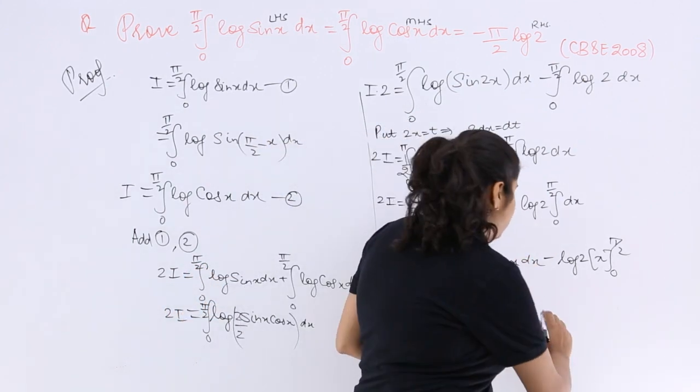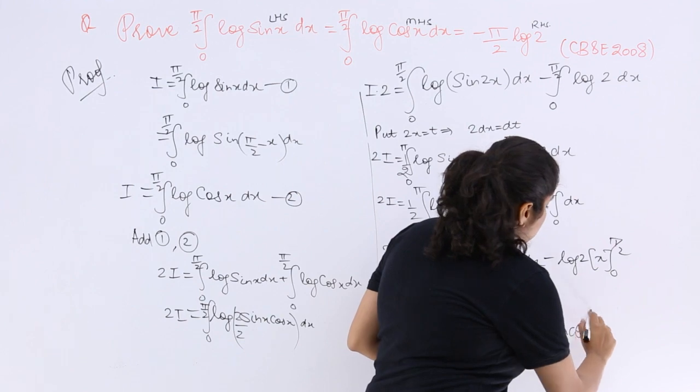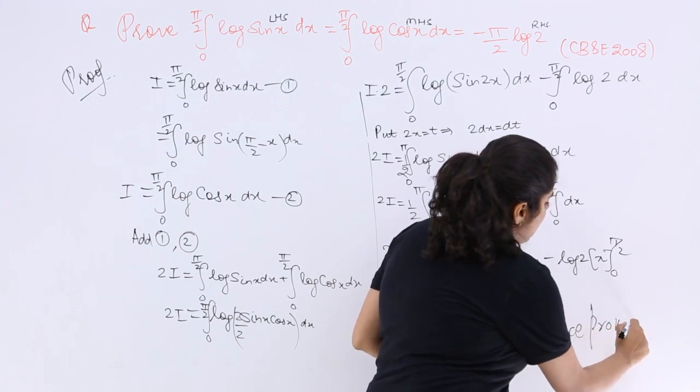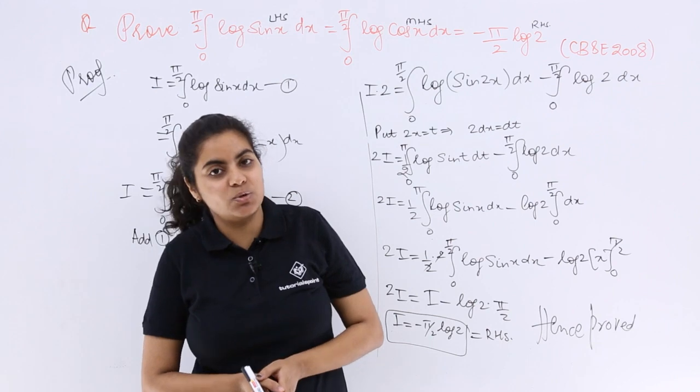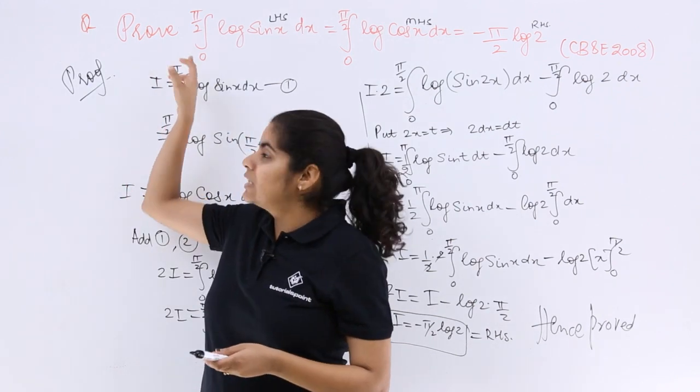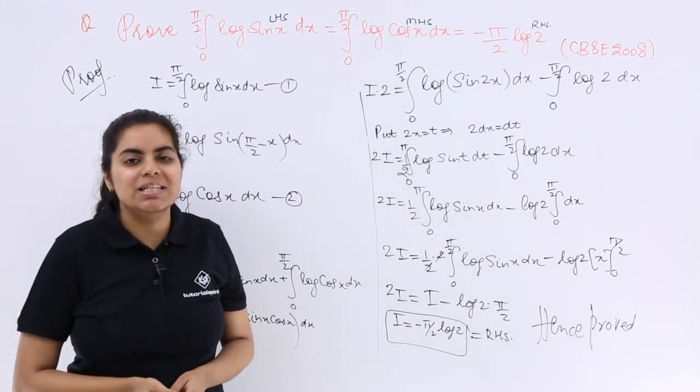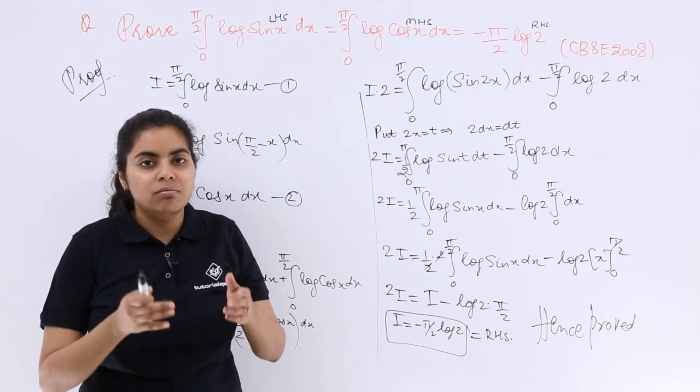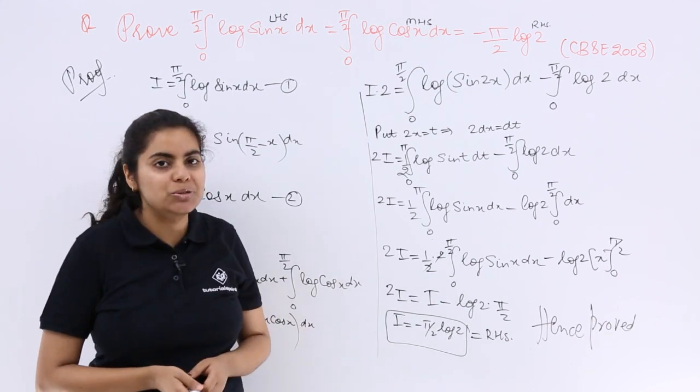So I would be writing I have proved everything, hence proved that log sin x dx from 0 to π/2 which is here is equal to log cos x dx from 0 to π/2 is equal to minus π/2 log 2.